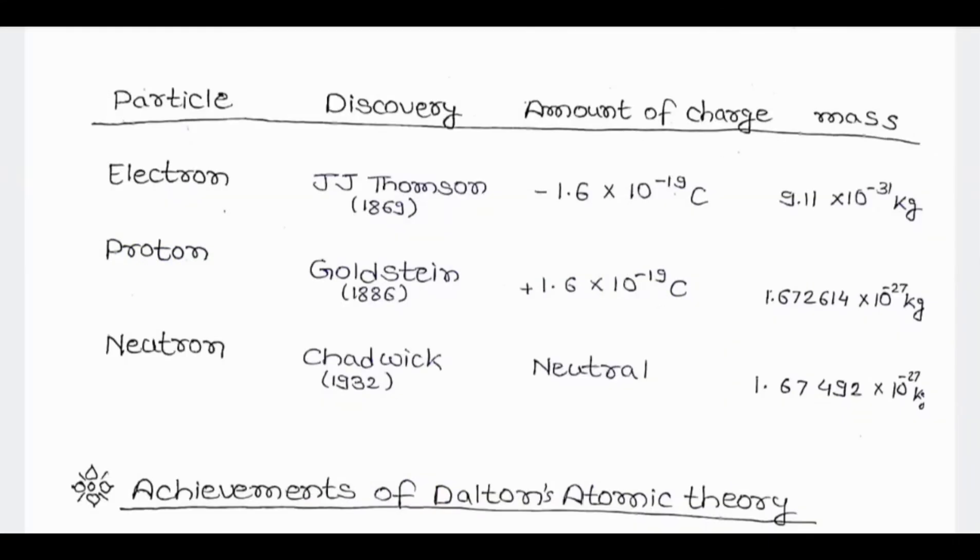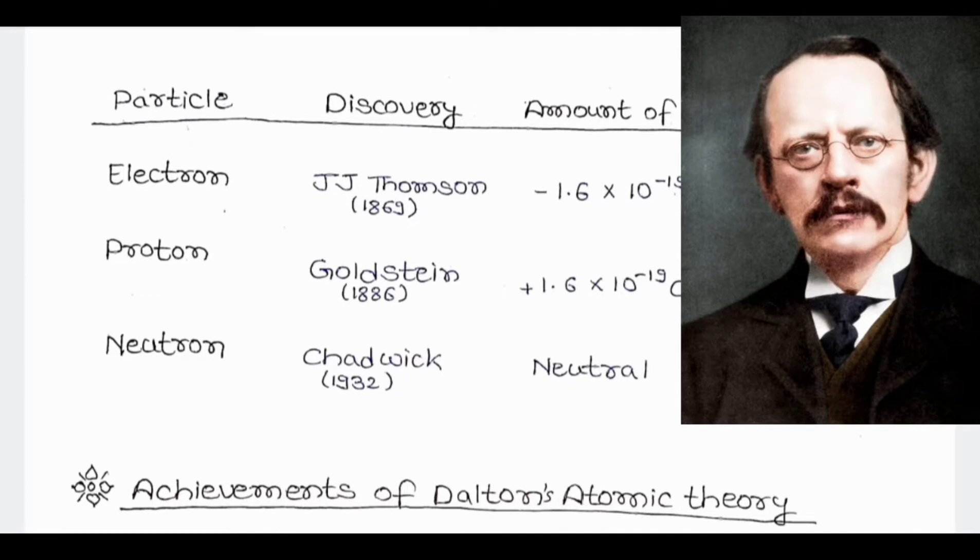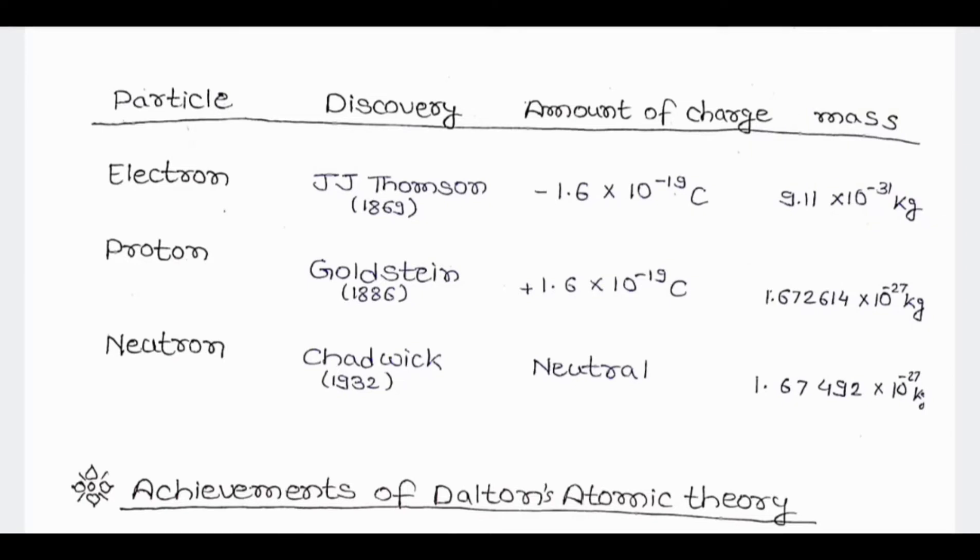Electron was discovered by J.J. Thomson in 1897 and it has an amount of charge of minus 1.6 into 10 to the power minus 19 coulomb and it has a mass of 9.11 into 10 to the power minus 31 kg.